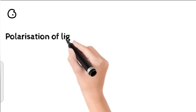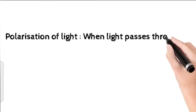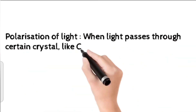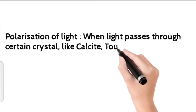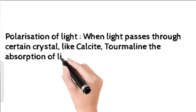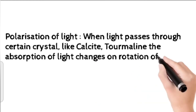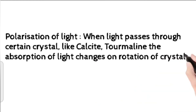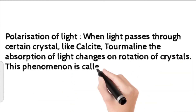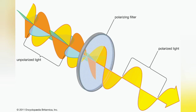6. Polarization of light. When light passes through certain crystals like calcite or tourmaline, the absorption of light changes on rotation of the crystals. This phenomenon is called polarization of light.